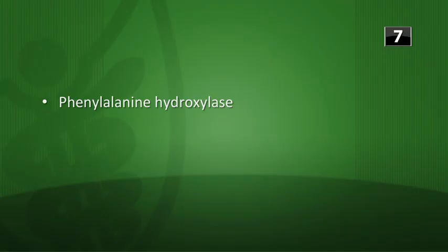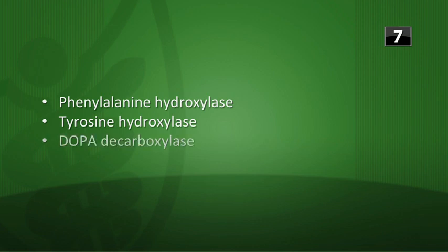First question: which three enzymes are required to convert phenylalanine to dopamine? Phenylalanine hydroxylase converts phenylalanine to tyrosine; tyrosine hydroxylase converts tyrosine to dopa; and dopa decarboxylase converts dopa to dopamine.